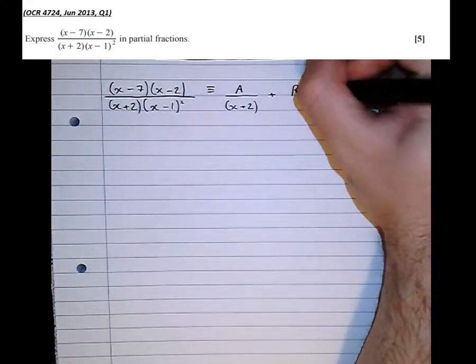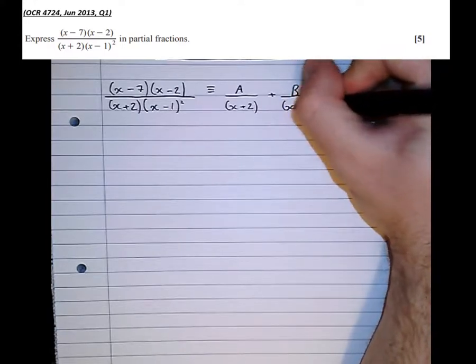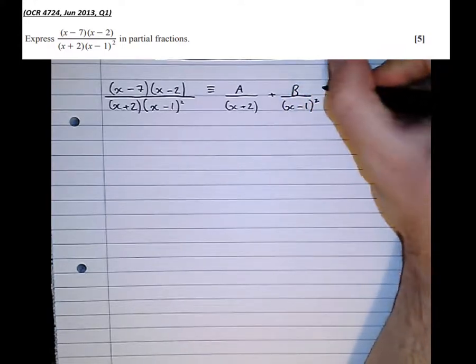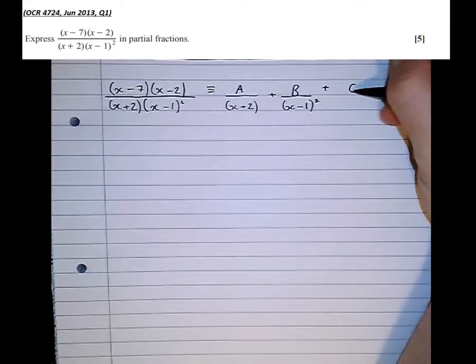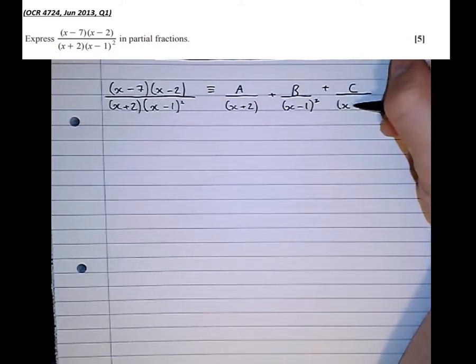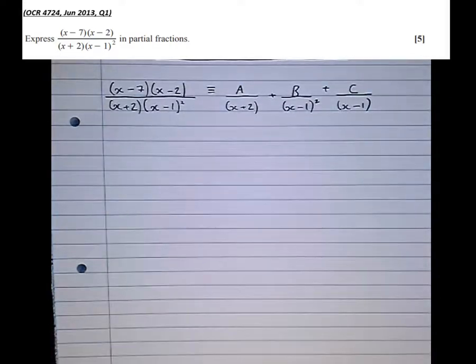But there's a third factor that's hidden away in that x minus 1 squared. The third factor is just that bracket without the squared. And that's the extra bit that you need to be aware of when doing these.